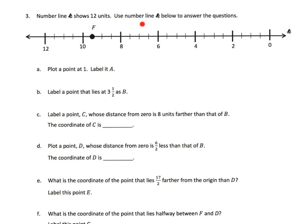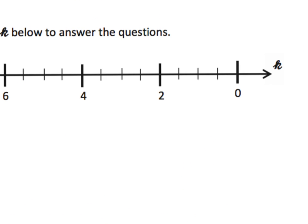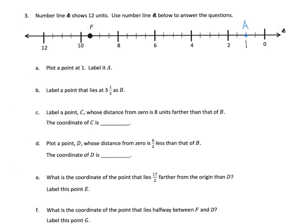It says use number line K to answer all of these questions. So plot a point at one. So the first thing we have to know is well here's zero, here's two, so that means one is going to be smack dab in the middle of those. So plot a point at one. So let's see, we're going to zoom in and that means our point is going to be here and we were supposed to use the letter A. And so that's what that first question is going to look like.